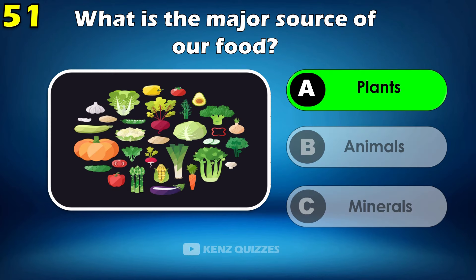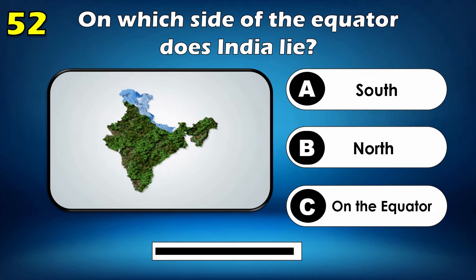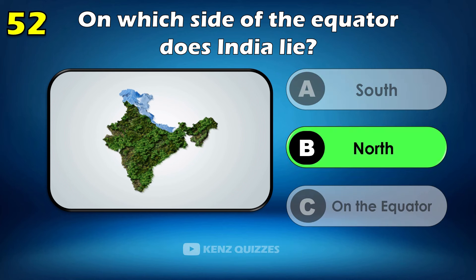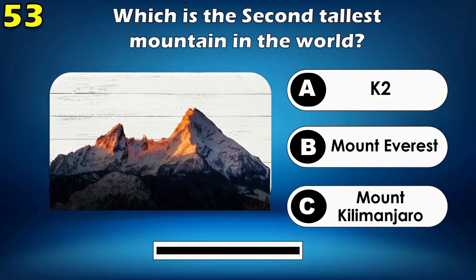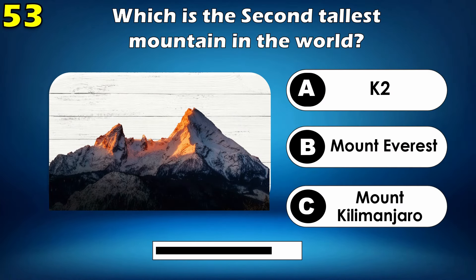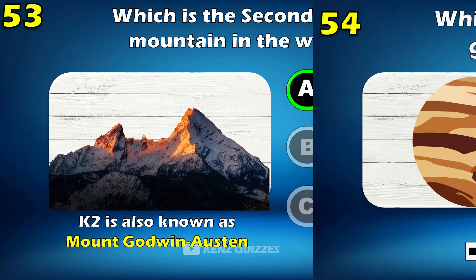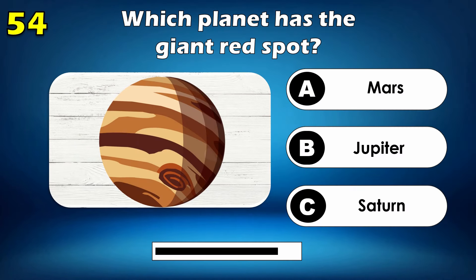On which side of the equator does India lie? North. Which is the second tallest mountain in the world? K2.